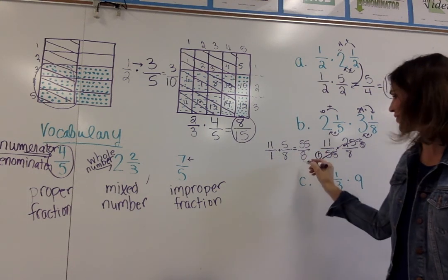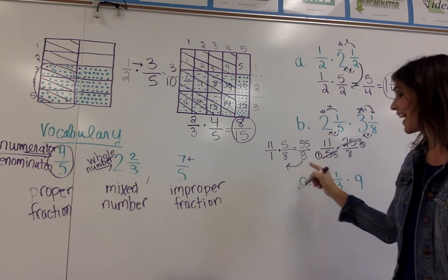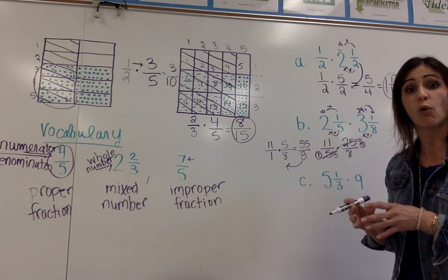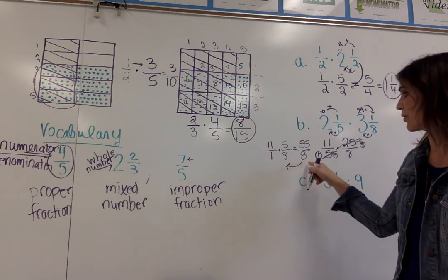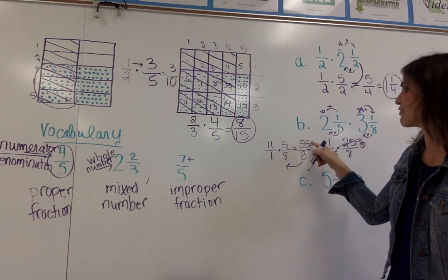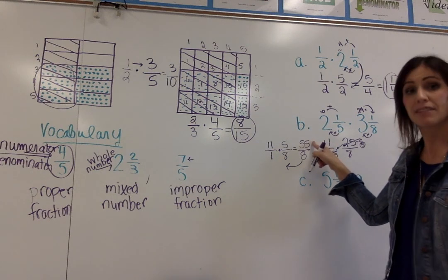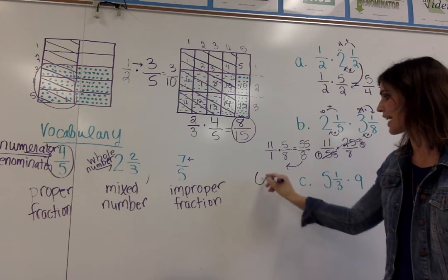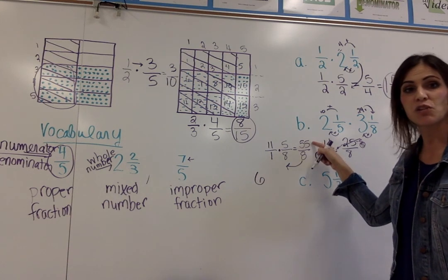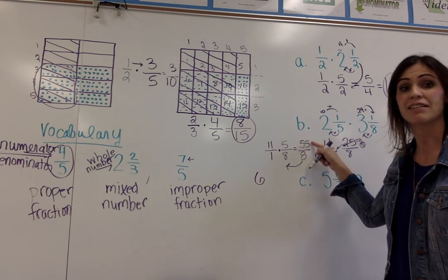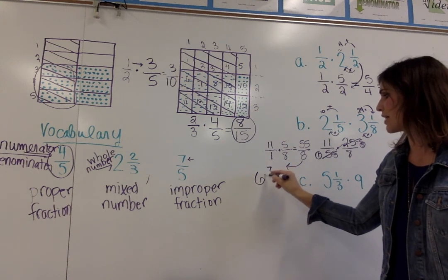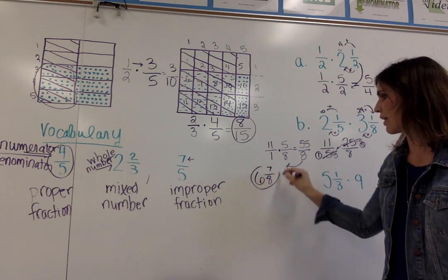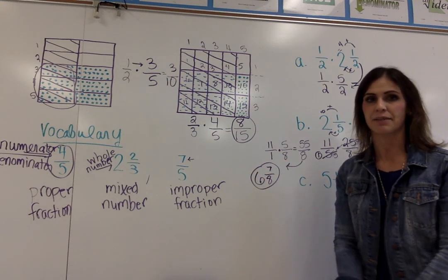I can leave fifty-five-eighths as it is in simplest form, or I can rewrite it as a mixed number. Eight goes into fifty-five six times, and eight times six is forty-eight. The difference between fifty-five and forty-eight is seven, so seven is my numerator and my denominator stays as eight. So I have six and seven-eighths.